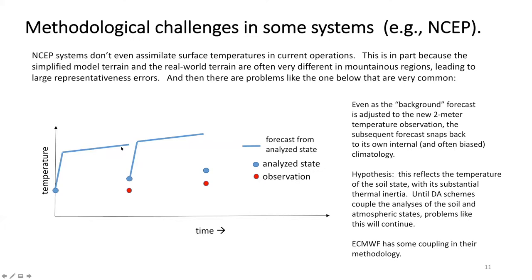Do any systems have a way to take atmospheric observation data and make an increment to the soil? Some do. For example, ECMWF does a surface temperature analysis and uses the increments from their surface temperature — the adjustment made in the data assimilation system — to make an adjustment to the soil state. More sophisticated methods are on the way, but this highlights one of the methodological challenges we are dealing with.